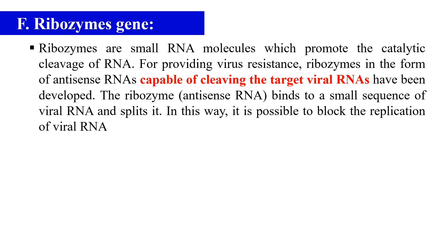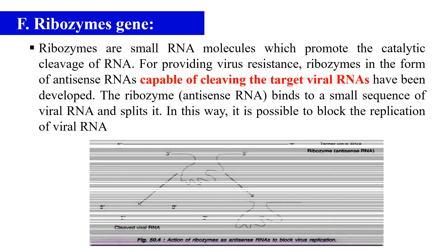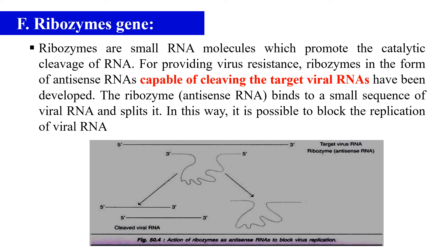For that we can use this ribozyme gene. As you can see in this diagram, there are two types of RNA: the first one is the target virus RNA and the other is the ribozyme. As we add the ribozyme, it will cleave the virus RNA into small fragments and will not allow the virus to replicate. By this mechanism we can use a ribozyme gene to make ribozymes that cleave the RNA genome of the viruses and protect our plant from virus diseases.